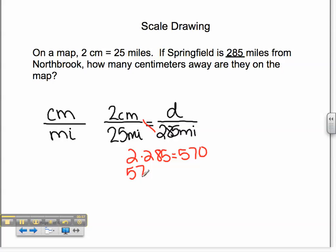I then divide 570 divided by 25, which equals 22.8 or 22 and 4 fifths. That leaves me with a solution that the distance on the map is 22 and 4 fifths centimeters.